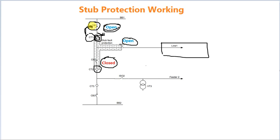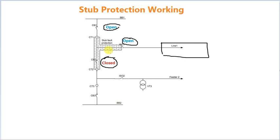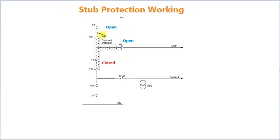If we are not able to sense this, the circuit breaker will receive a trip command. So if you want to read the scheme, please use stub bus protection. If you want to enable the protection, you can use a contact with an isolator. If you want to open the isolator, you can enable the stub bus protection. You can connect the distance protection. This is the stub bus protection.